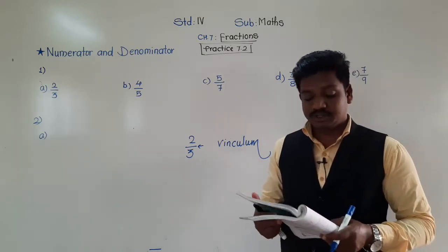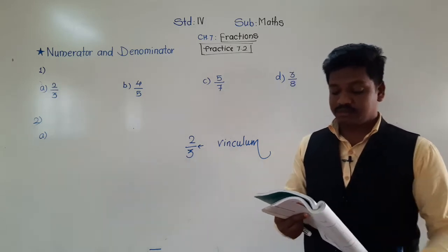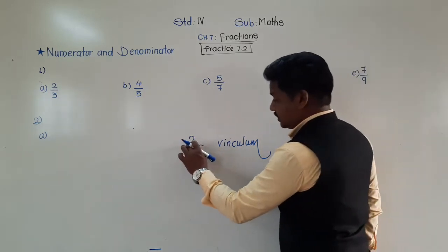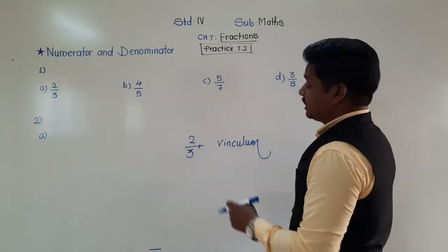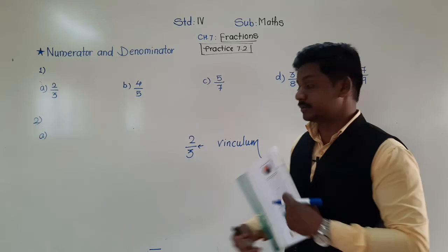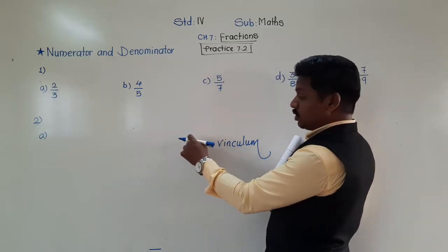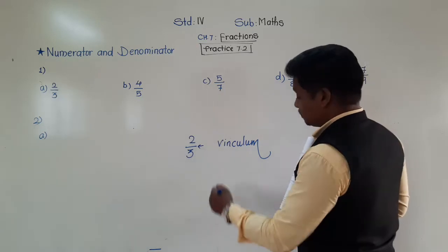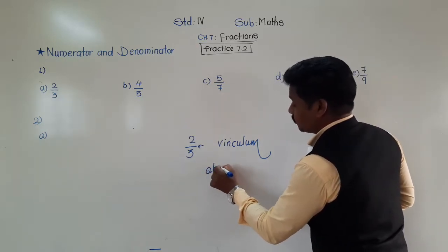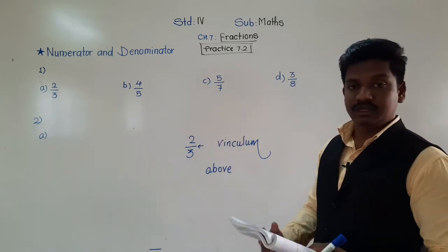Second question: the numeral written dash dash the vinculum is called numerator. Numerator is above the vinculum or below the vinculum? Above. So, you write 'above' here. The number written above the vinculum is called numerator.